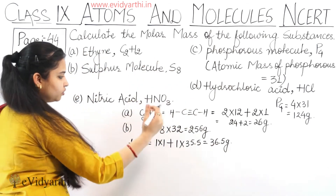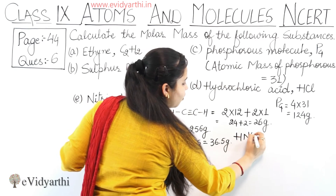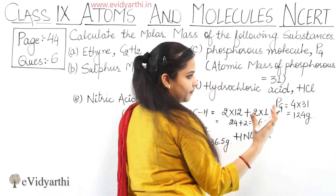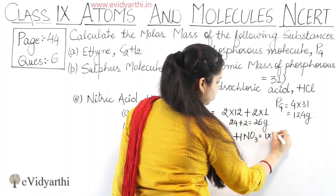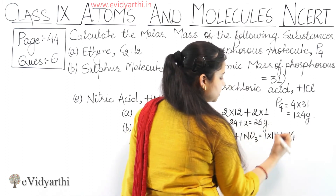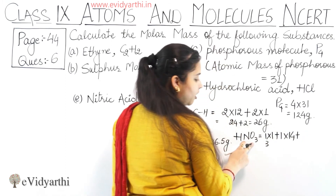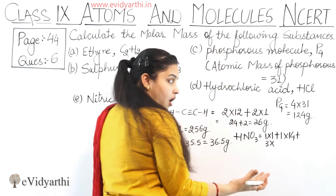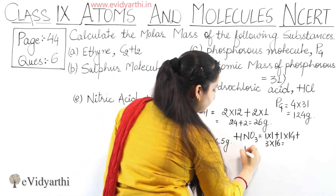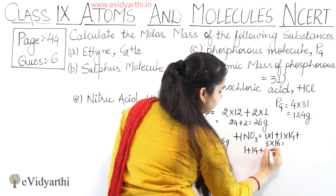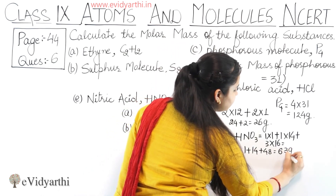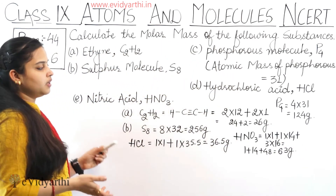Part E — nitric acid, HNO3. Hydrogen: 1 atom × 1 = 1. Nitrogen: 1 atom × 14 = 14. Oxygen: 3 atoms × 16 = 48. Total = 1 + 14 + 48 = 63 grams. So the molar mass of nitric acid HNO3 is 63 grams.